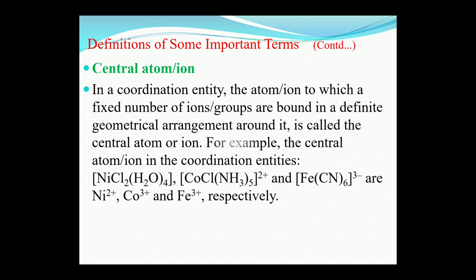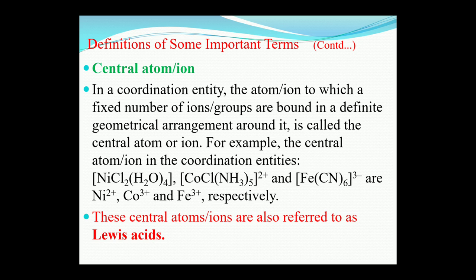Now, the definition of a central atom or ion. In the coordination entity, the atom or ion to which a fixed number of ions or groups are bonded in a definite geometrical arrangement is called the central atom. For example, the central atoms in coordination entities are Ni²⁺, Co³⁺, and Fe³⁺. These central atoms or ions are also referred to as Lewis acids because they carry a positive charge, allowing them to accept electrons.